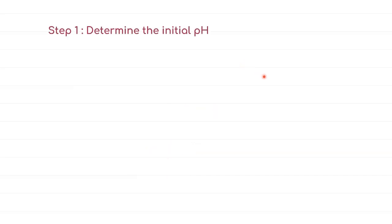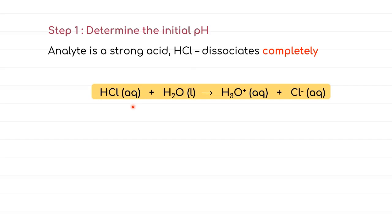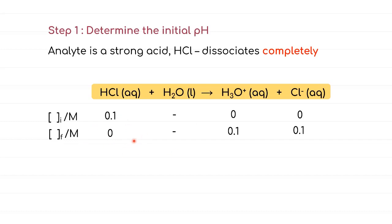To determine the initial pH of HCl, we first write the chemical dissociation of HCl — a strong acid that undergoes 100% dissociation in water — followed by an IF table (initial and final) to show the dissociation. Since the concentration of H⁺ is 0.1 M, we proceed to calculate pH = −log(0.1), giving pH = 1.